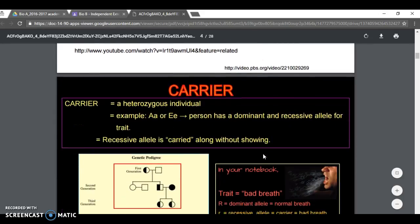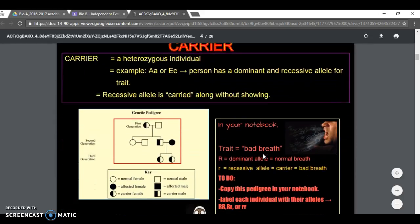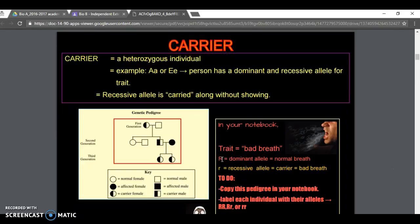Here we are, next slide. We have carrier. The idea of a carrier is someone who's heterozygous. That means they have a recessive version, a little r right here, and a dominant version of a gene. The name, if you recall from chapter 10 and 11, is a version of a gene is called an allele.